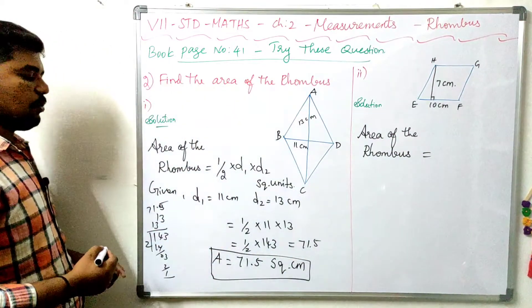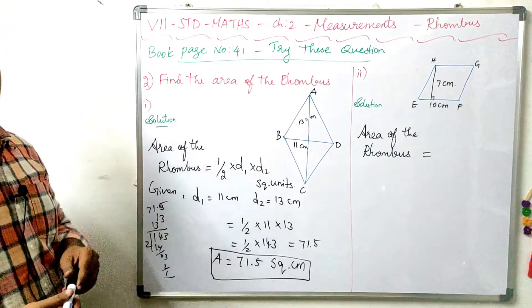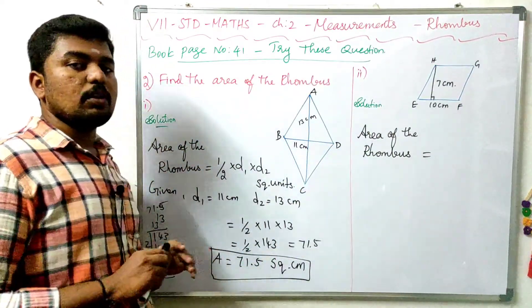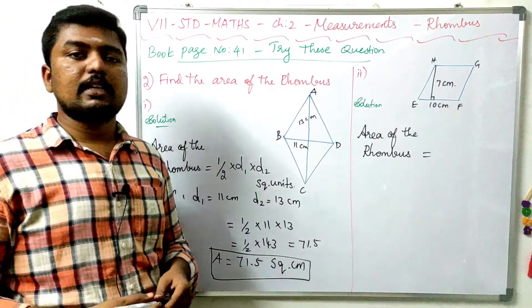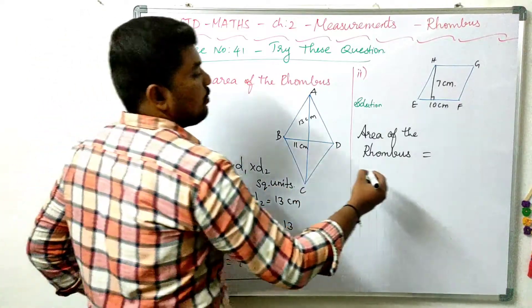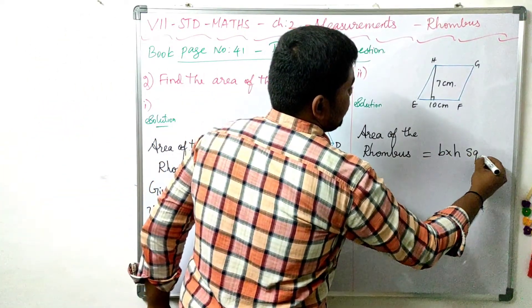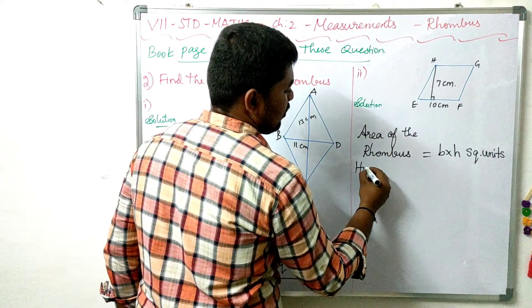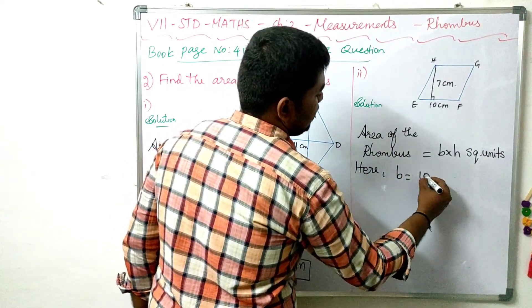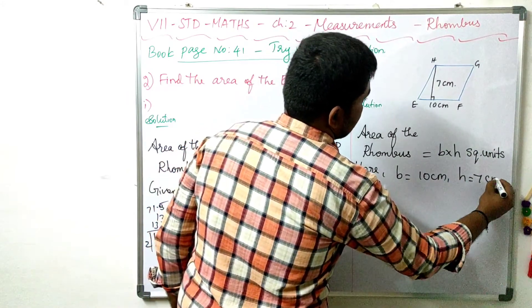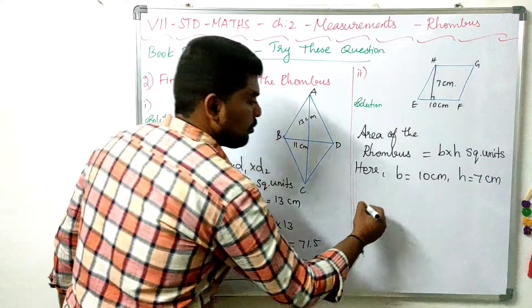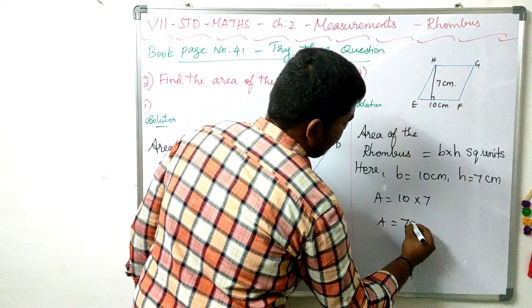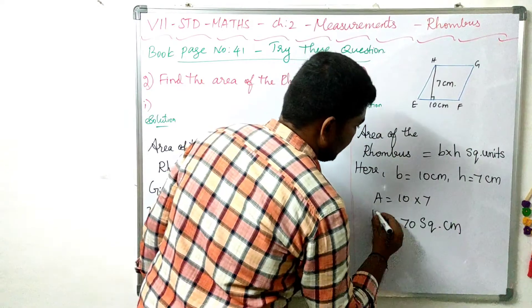For the second rhombus, the area of the rhombus is equal to base b multiplied by height h square units. Here, base b equals 10 centimetres and height h equals 7 centimetres. So 10 times 7 equals 70 square centimetres.